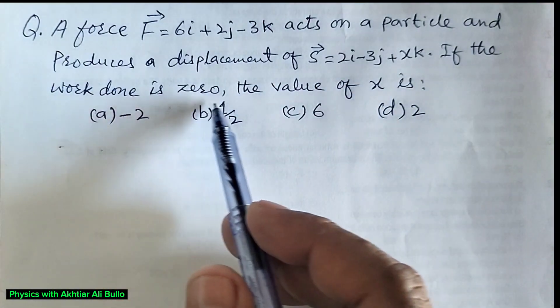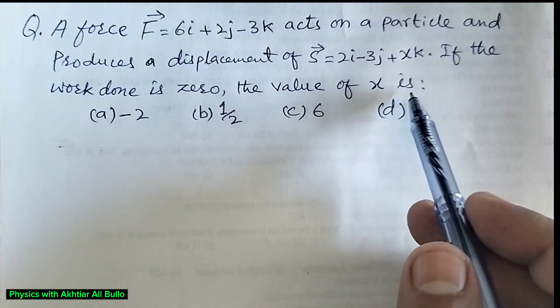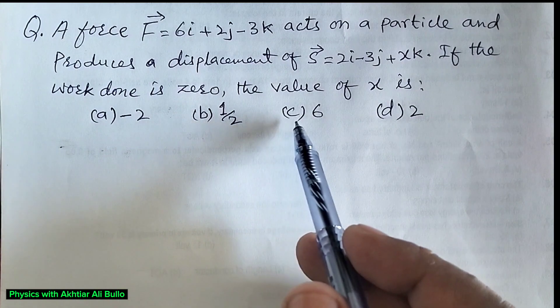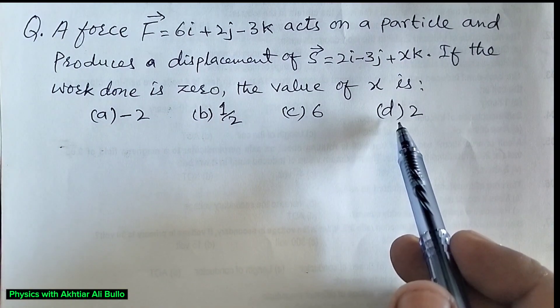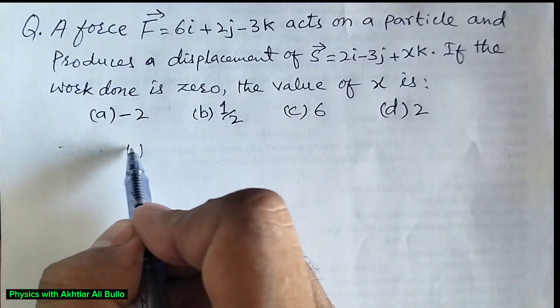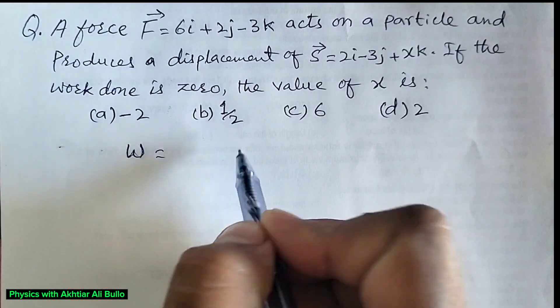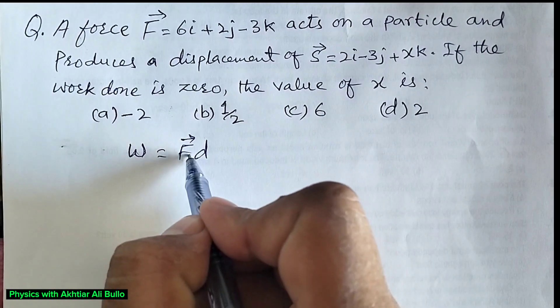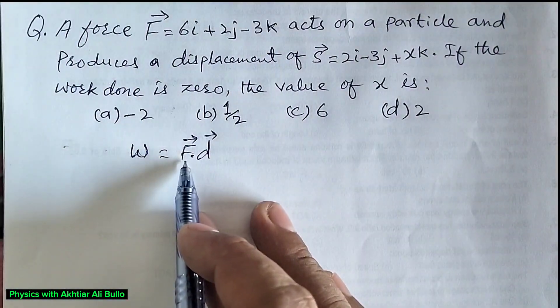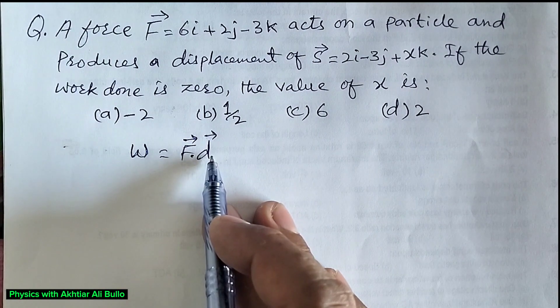If the work done is 0, the value of X is: A minus 2, B one-half, C 6, D 2. Work done means work is equal to F dot displacement. Work is the dot product of force and displacement.